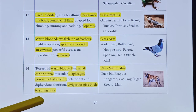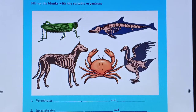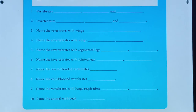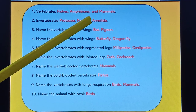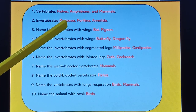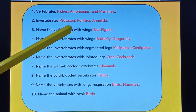Now for the activity, we will look at organism pictures and fill in the answers. For vertebrates, 3 examples are fish, amphibians, and mammals. There are 5 classes. Invertebrates include protozoa, porifera, and annelida, with 9 phylums total. Vertebrates with wings are birds; invertebrates with wings are insects — examples are butterfly and dragonfly.